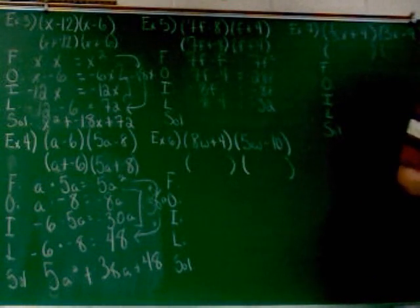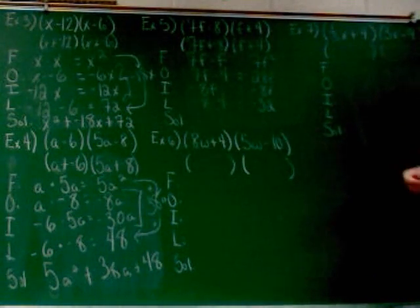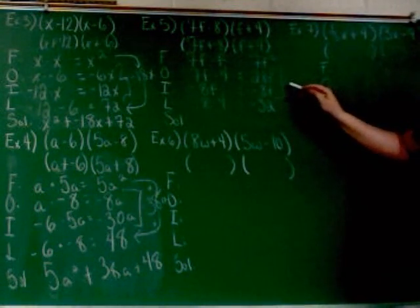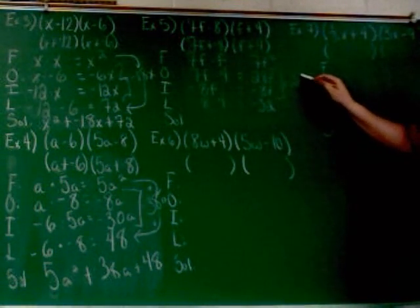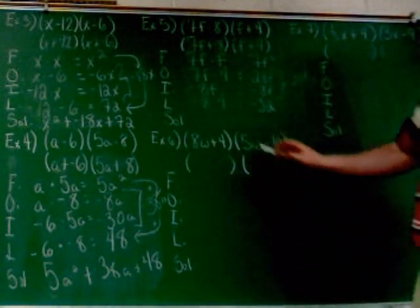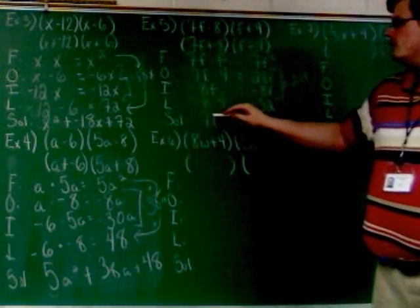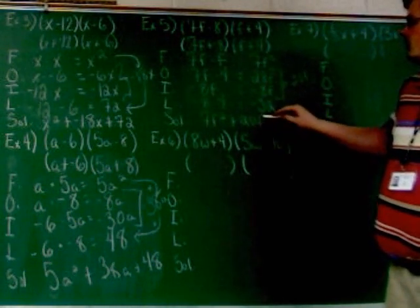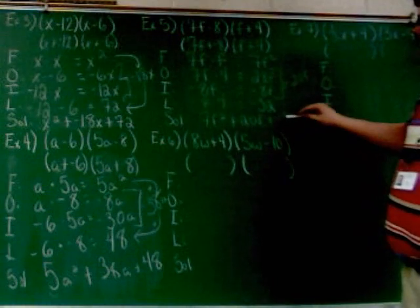Alright. Now, the outside and the inside terms get simplified. So these two go together. That's going to give you 20F. And then we just add up the parts. 7F squared plus 20F plus negative 32.